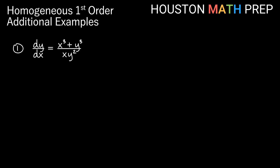For our first example, dy/dx equals x cubed plus y cubed all over xy squared. Remember our test for being homogeneous: we plug in tx everywhere there's an x and ty everywhere there's a y, and we should reduce to the original statement. If we do, then we're homogeneous.